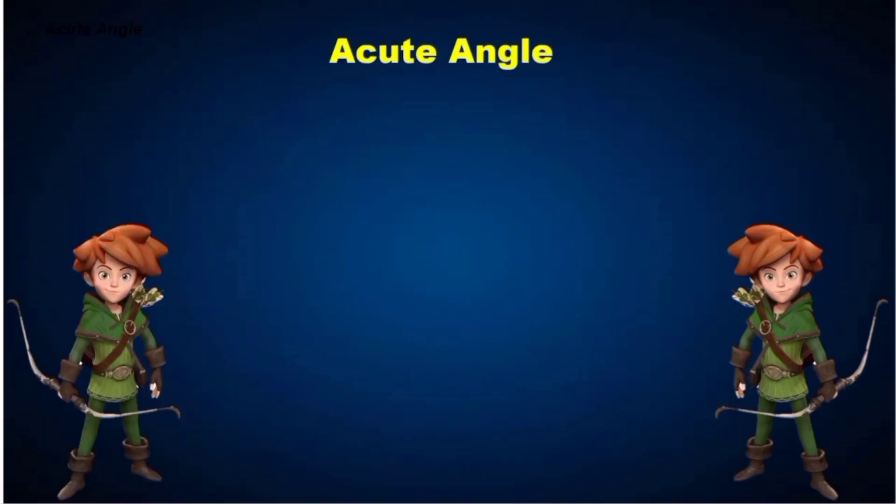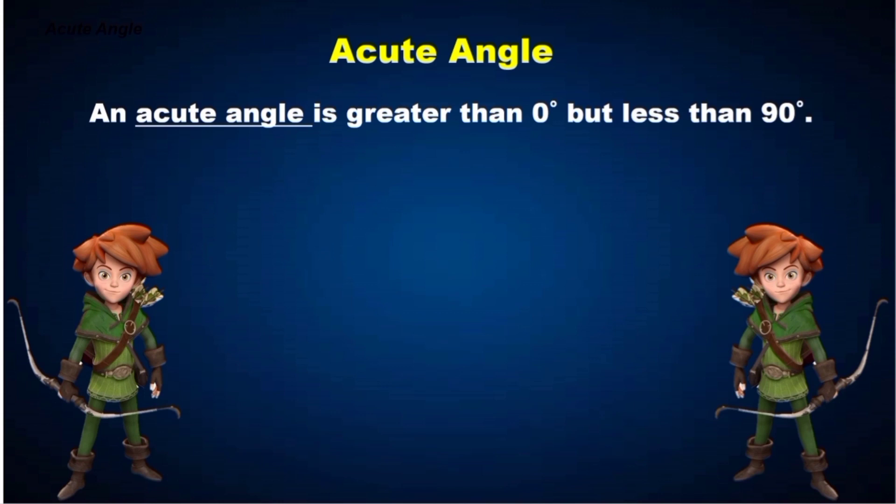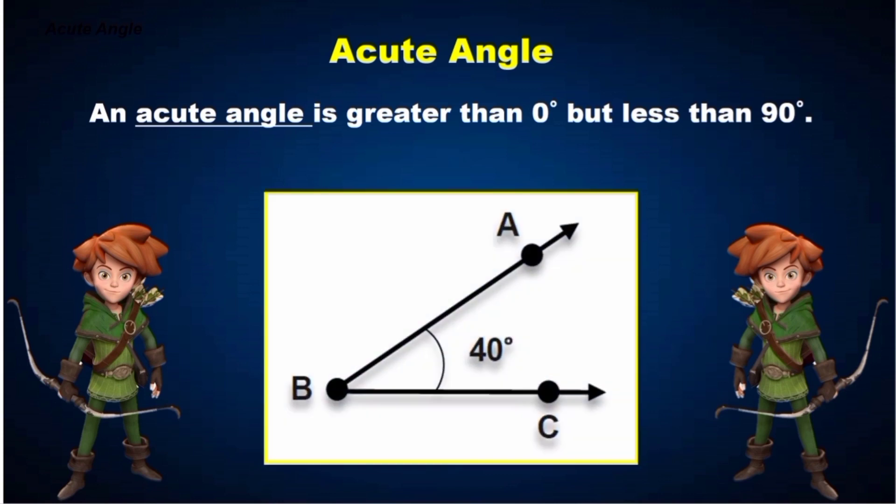Acute angle has a small opening. Right angle is perpendicular, and obtuse angle has the greatest opening. Now let's identify acute angle. An acute angle is greater than 0 degrees, but less than 90 degrees. Here is our example. Angle ABC is 40 degrees. Therefore, angle ABC is an acute angle.